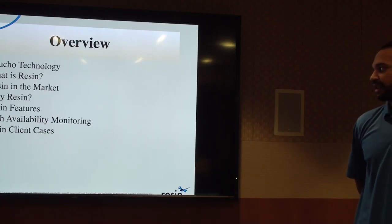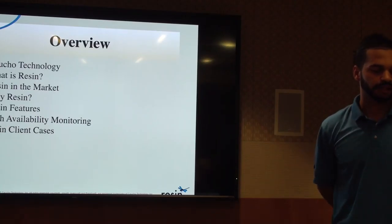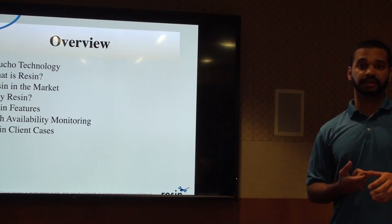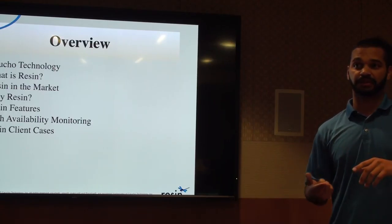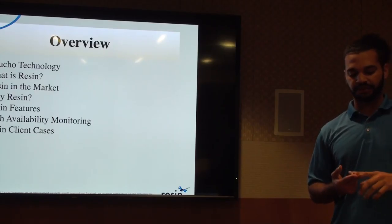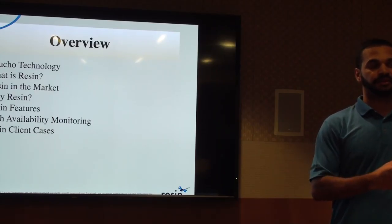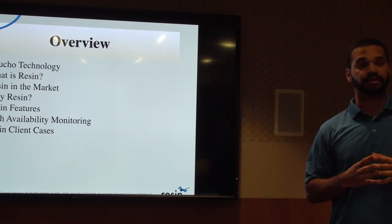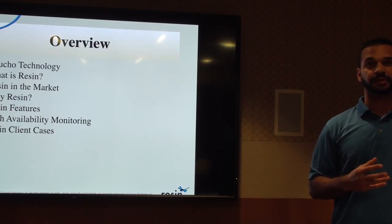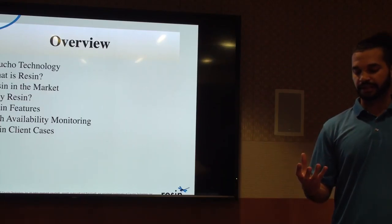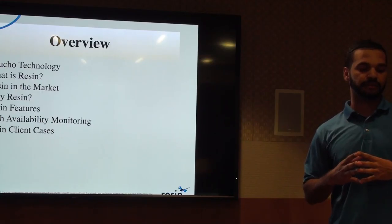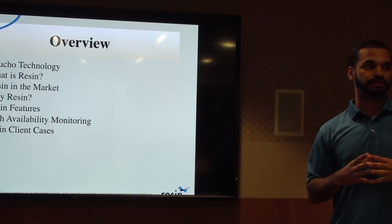When we talk about high availability at Caucho, we're really talking about two things. One is the ability to spin up more servers to answer requests. Two is the ability to recover from a server in a live deployment that may go down. Combining the ability to answer more requests with recovery when servers go down is how our users define their four nines of high availability.